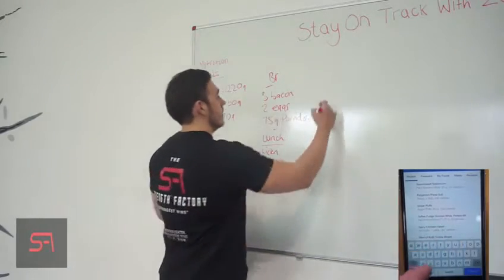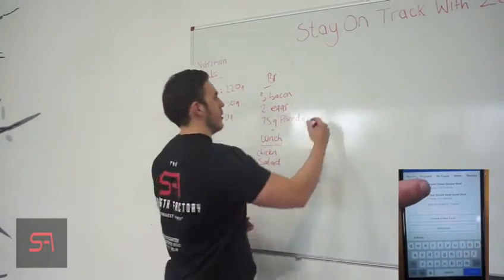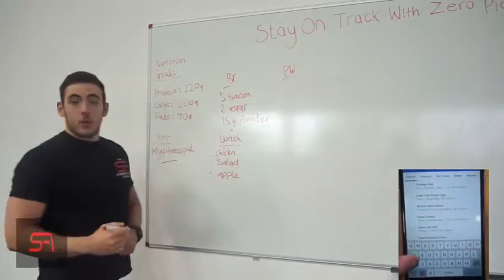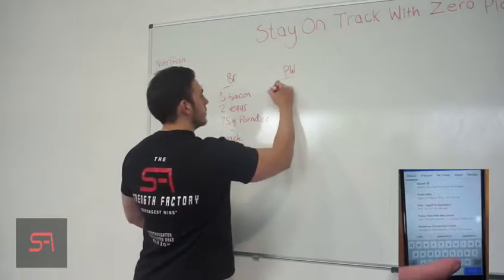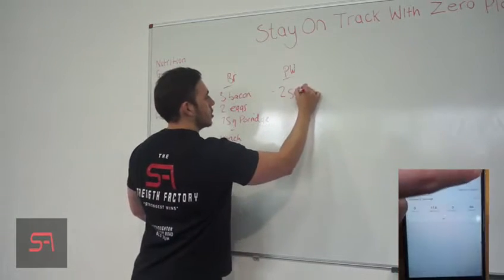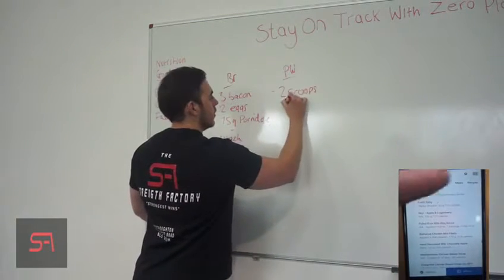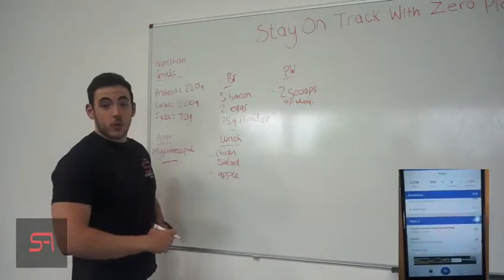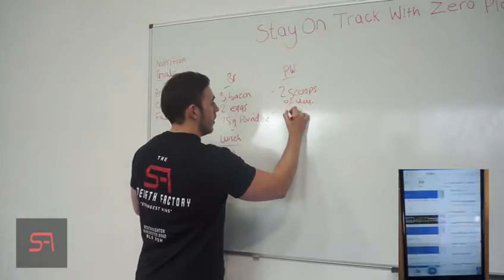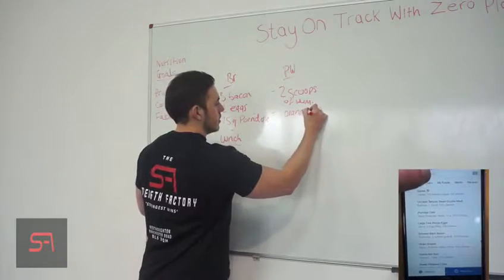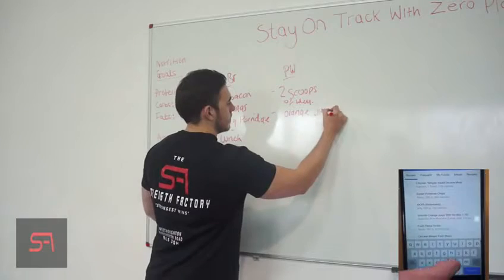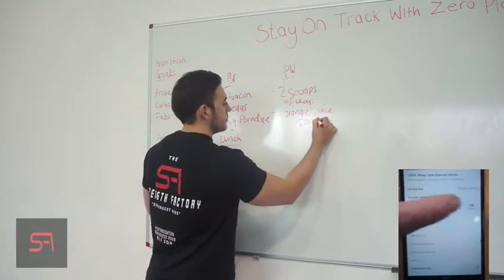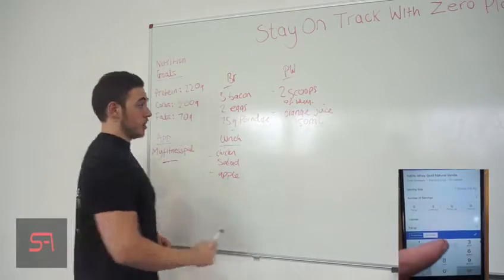Next meal, it's going to be, I tell you what, we're going to train. Let's say we're training now. Next meal will be post-workout shake. So, we'll go for two scoops of whey. And let's say we just have some orange juice available for some carbs. We'll go for orange juice. About 150 milliliters, small glass. Right, that's post-workout.